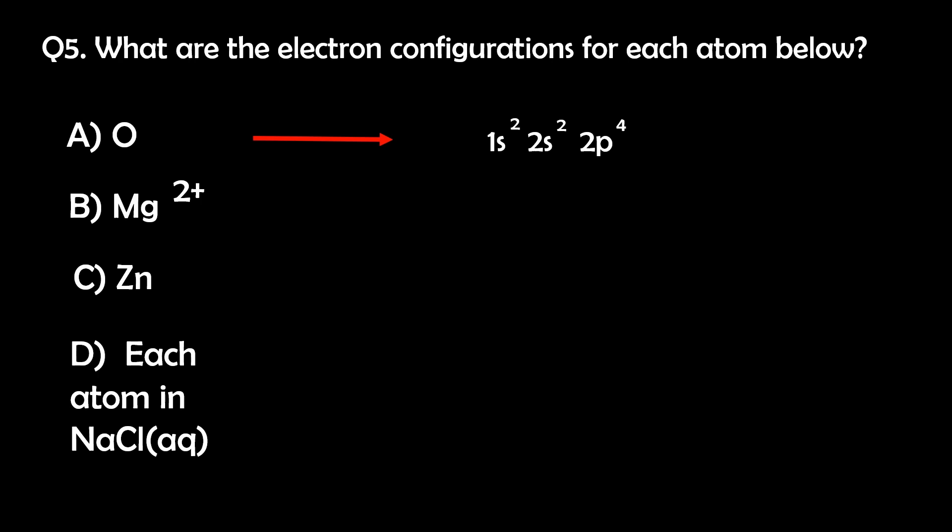For magnesium 2 plus, remembering it has two electrons taken away because of the 2 plus charge, its electron configuration is 1s2, 2s2, 2p6, or simply just neon.